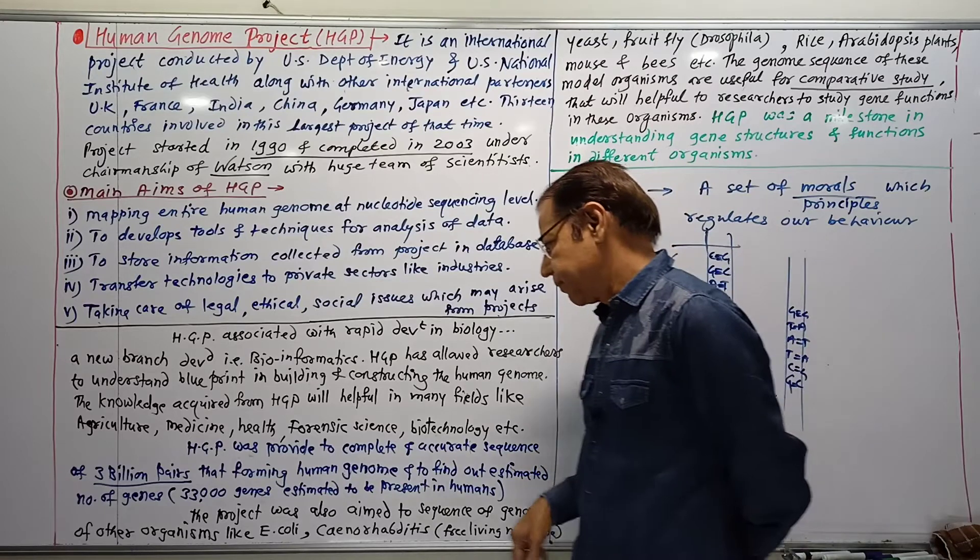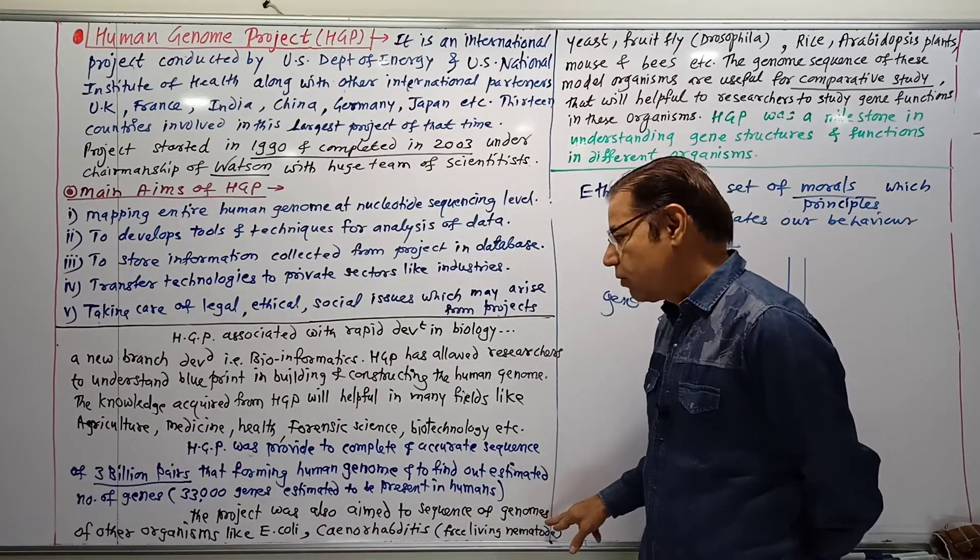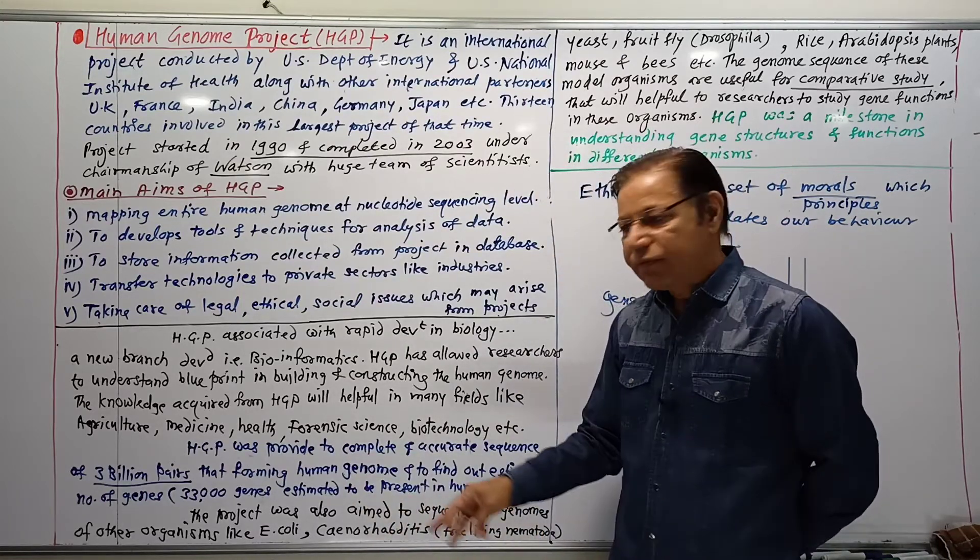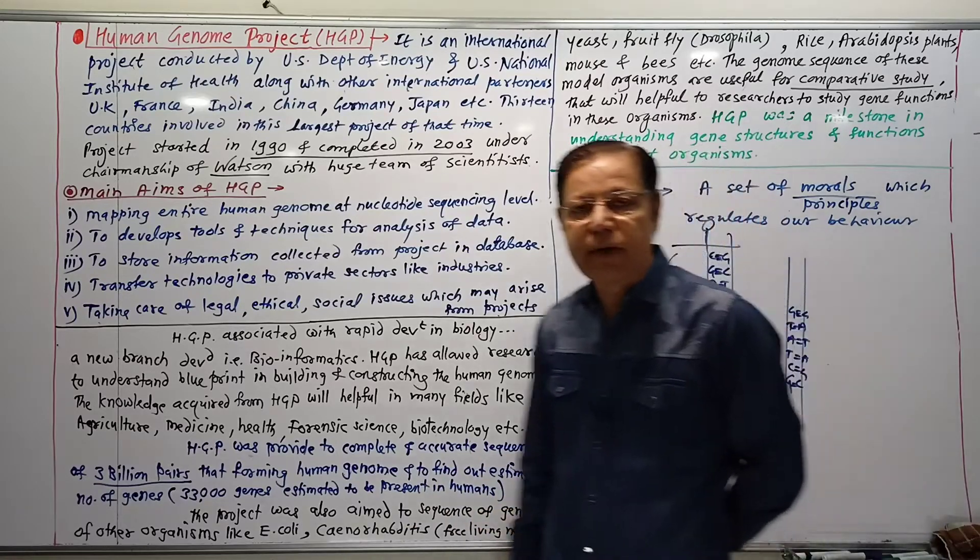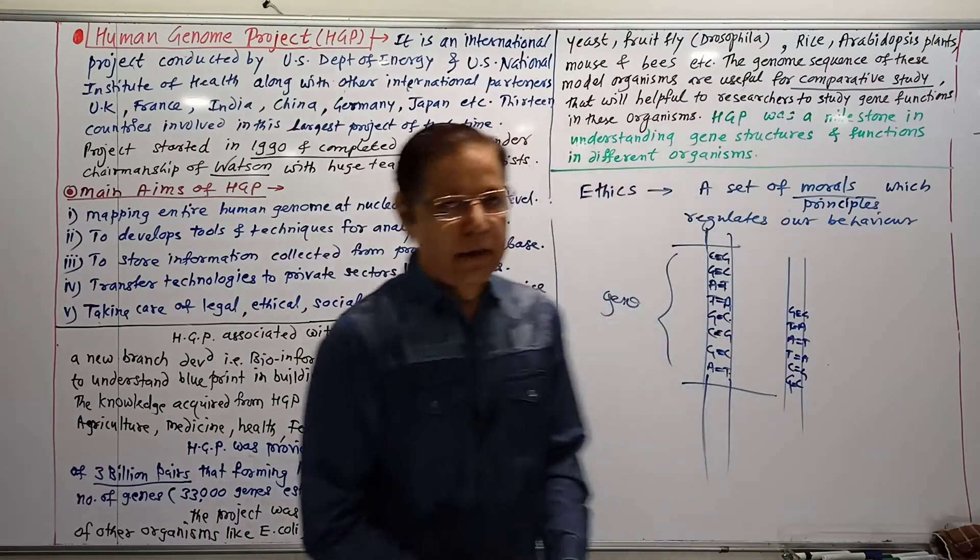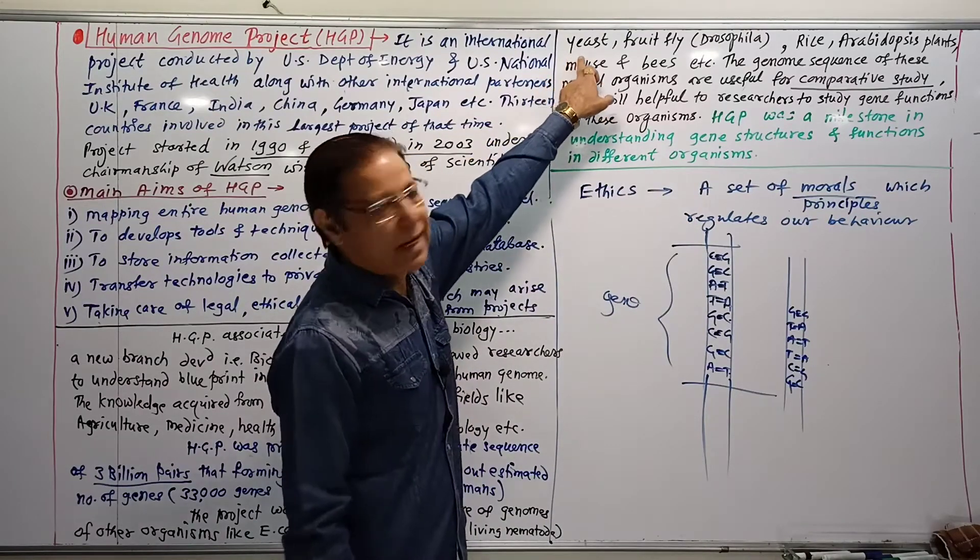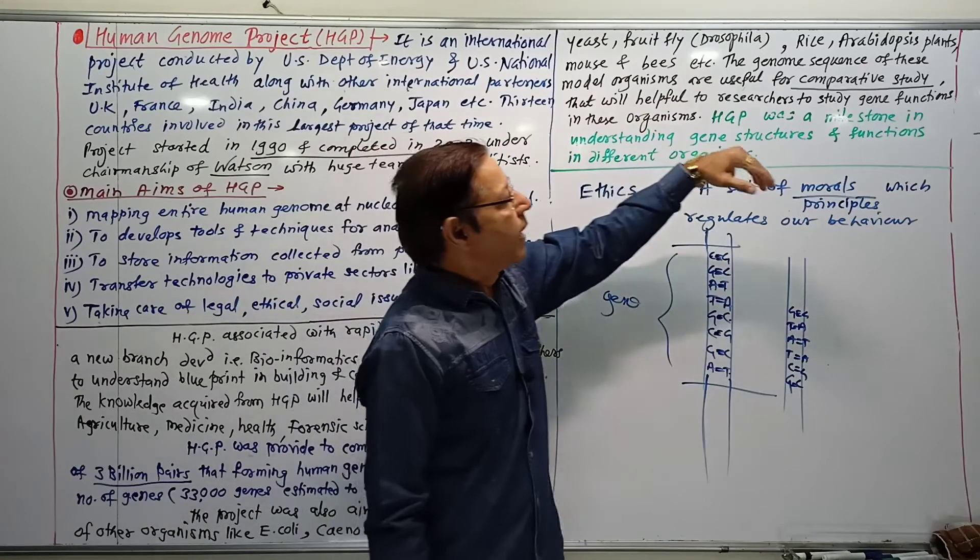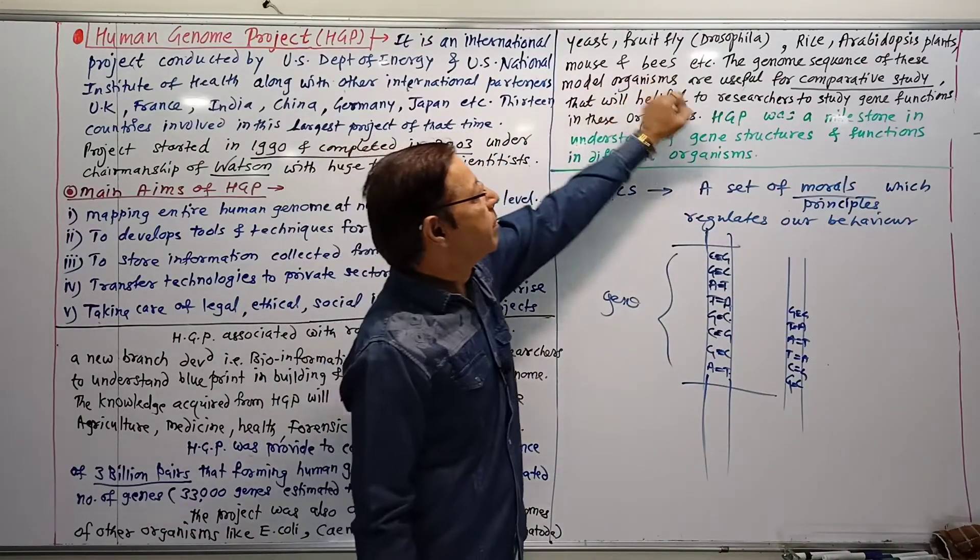The project also aimed to sequence genomes of other organisms like E. coli, Caenorhabditis elegans—a free-living, non-pathogenic nematode threadworm—yeast Saccharomyces, fruit fly Drosophila, rice and Arabidopsis plants, mouse, bees, and others.